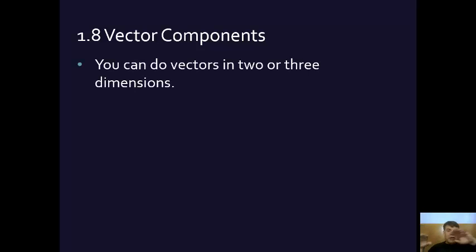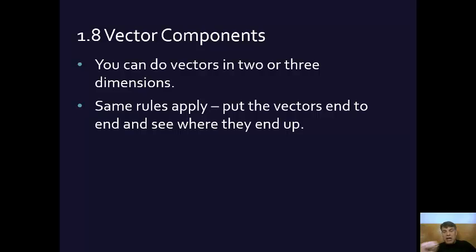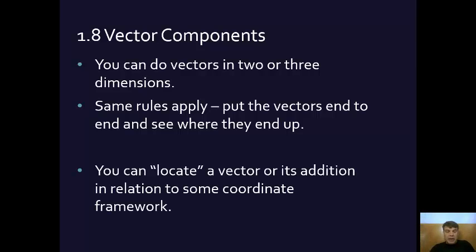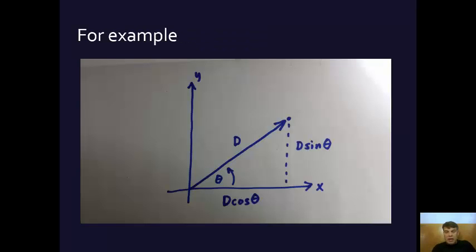Vectors can exist in two or three dimensions — like a plane, or the Starship Enterprise, which has vectors in three dimensions. The same rules apply: you put the vectors end to end and see where they end up, just in three dimensions instead of on a piece of paper. You can locate a vector using coordinate systems — X, Y, Z. In the picture I have here, this would be the Y component and this would be the X component.